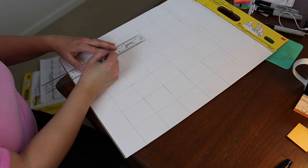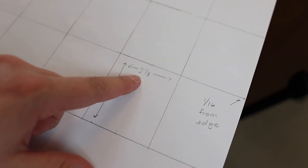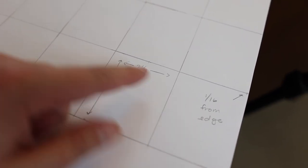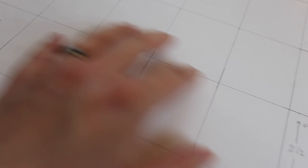So each day of our calendar here is two and an eighth inches wide, two and a half inches tall. It's one-sixteenth from the edge on both sides so that the grid is completely centered.